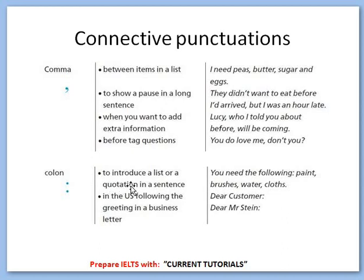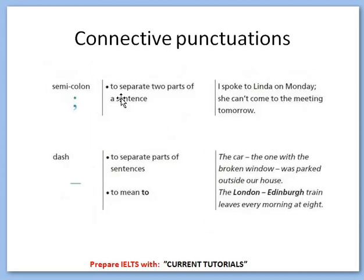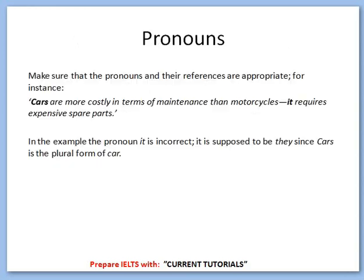Use a colon to introduce a list or a quotation in a sentence — for example, 'You need the following: paint, brushes, water, cloths.' In US English, a colon can also follow greetings like 'Mr. Customer' or 'Mr. Amir.' Use a semicolon to separate two related parts of a sentence — for example, 'I spoke to Linda on Monday; she can't come to the meeting tomorrow.' Use a dash to separate a part of a sentence — for example, 'The car — the one with the broken windows — was parked outside my house.'